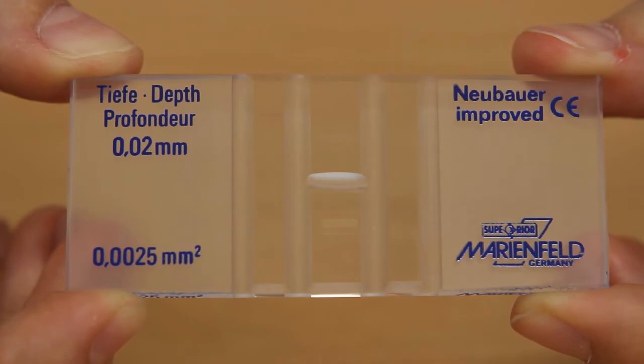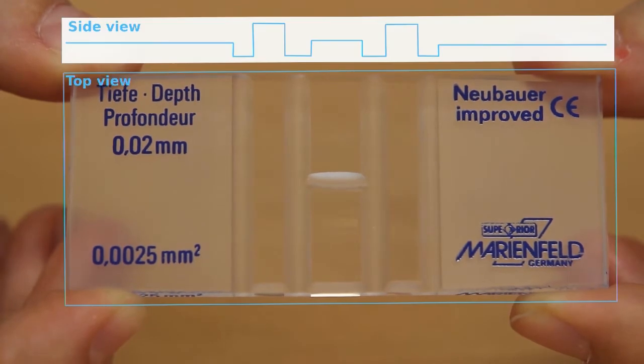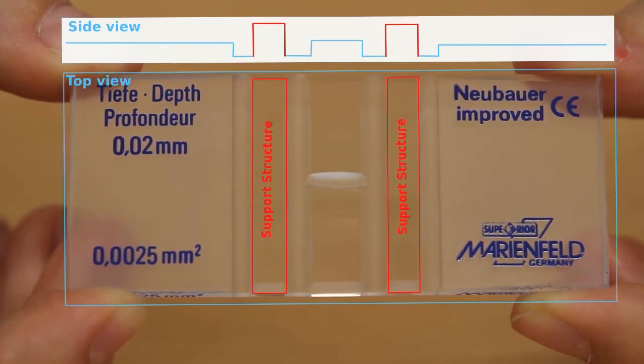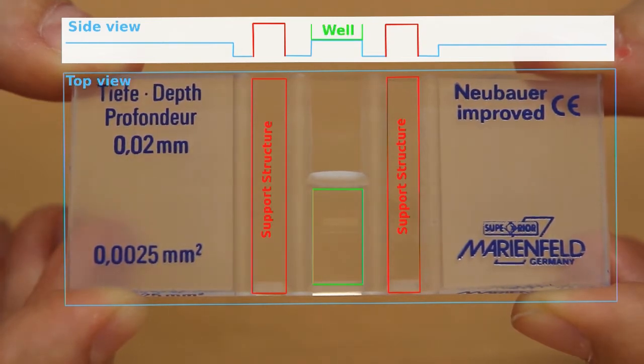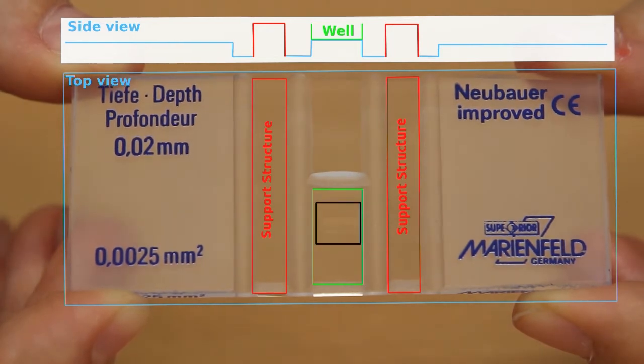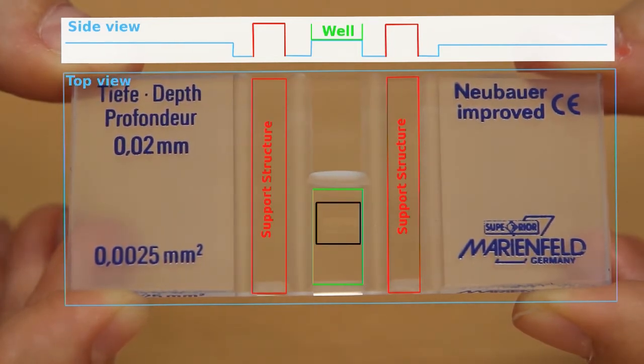A hemocytometer consists of a thick glass microscopy slide with two support structures in the middle. The area between those structures creates a well with a defined area. Additionally, lines are etched into the surface which further subdivide the area.